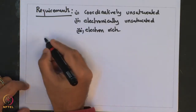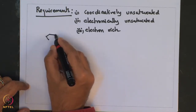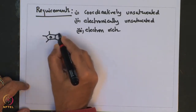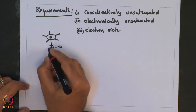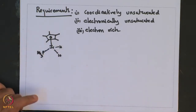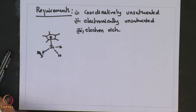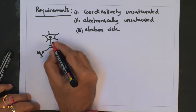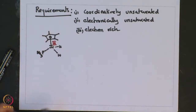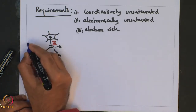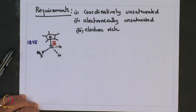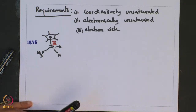Let me illustrate this with an example. This Cp* iridium hydride complex is in the iridium +3 oxidation state and it has 18 valence electrons. So this is both coordinatively saturated as well as electronically saturated, and hence would not be forming an alkane complex.